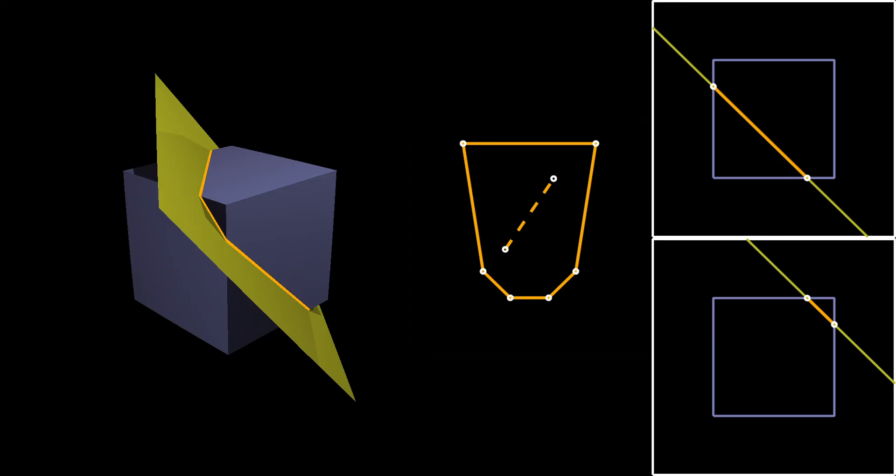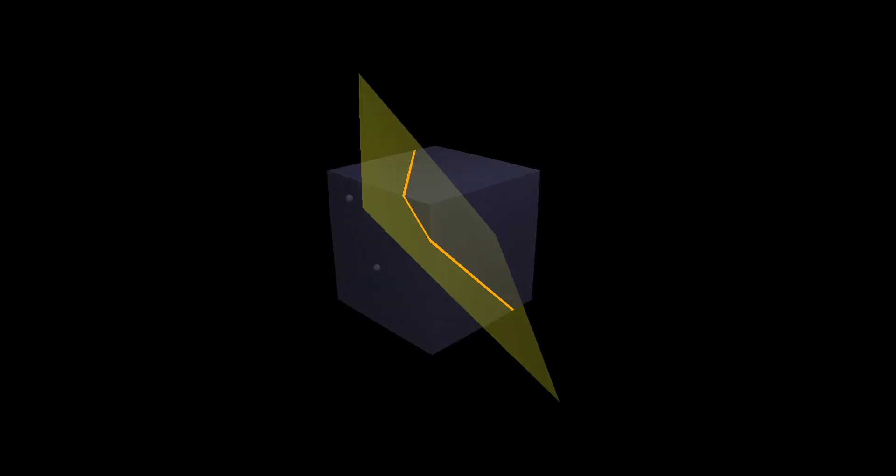Now, why does this cross-section need to be convex? Well, it's because the cube is convex and the plane is convex and the intersection of two convex sets is convex.